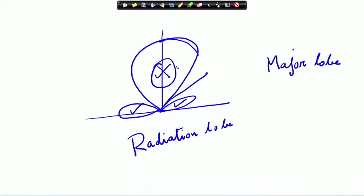Any lobe except the major lobe is called a minor lobe. Any lobe which does not contain the maximum direction of radiation is called a minor lobe.